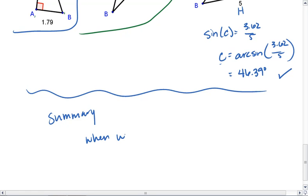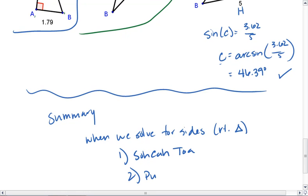When we solve for sides of a right triangle, we're either going to use SOH CAH TOA or we're going to use the Pythagorean theorem.